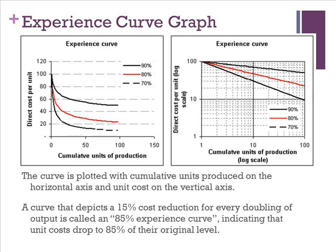An example here states that a curve depicting a 15% cost reduction for every doubling of output is called an 85% experience curve. This indicates that the unit cost dropped to 85% of the original level.